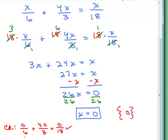So the solution to this problem is 0. And when you check, make sure there's no way you end up with a 0 in the denominator, which, of course, they were all numbers to begin with, 6, 3, and 18. So that didn't happen.